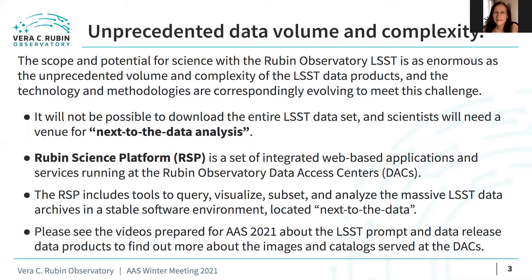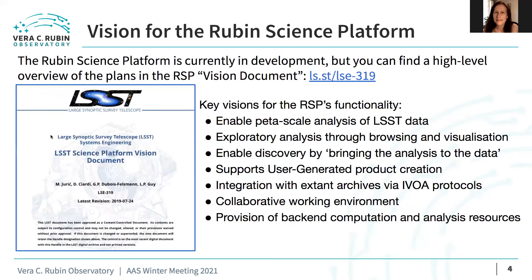Please see the other videos in the series created for the AAS 2021 Winter Meeting for more information about the data products themselves, as we will not cover them in this presentation. The Rubin Science Platform is currently in development, but you can find a high-level overview of the plans for the RSP and its vision documents at ls.st/lse-319. The key points of this document are also summarized in the rest of this talk.